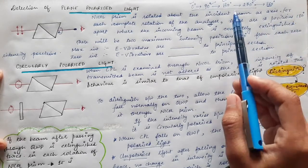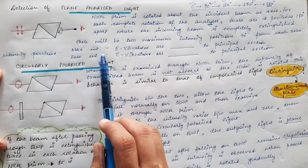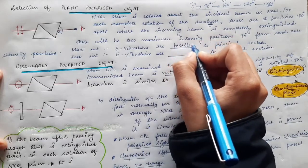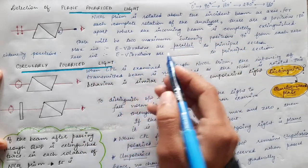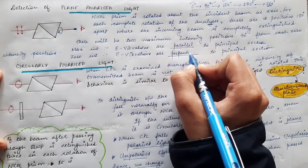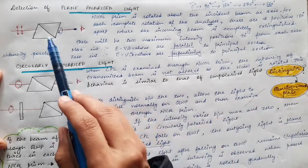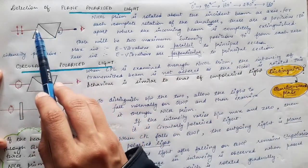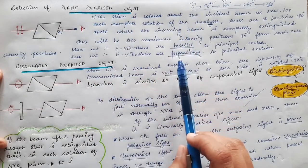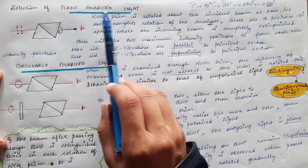This behavior — two maxima and two zero-intensity positions — happens only when the incident light is plane polarized light. Maximum intensity occurs when electric field vibrations are parallel to the principal section, and zero intensity occurs when electric field vibrations are perpendicular to the principal section. If this pattern is observed on rotation of the Nicol prism, then without any doubt the incident light is plane polarized light.